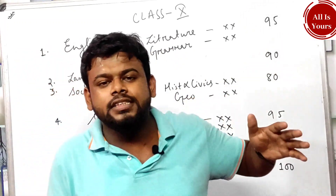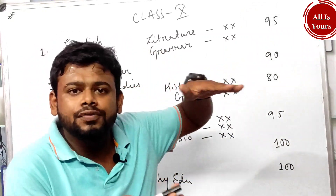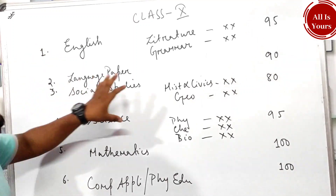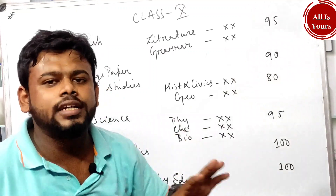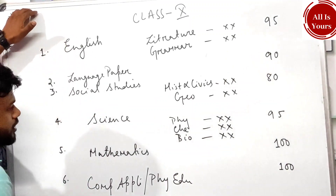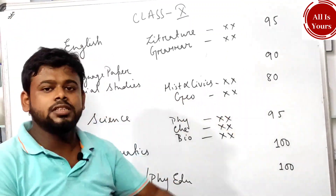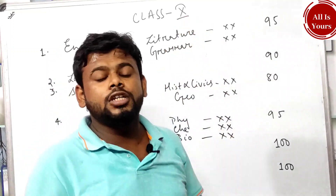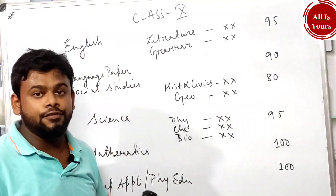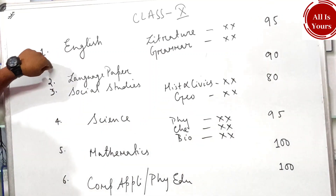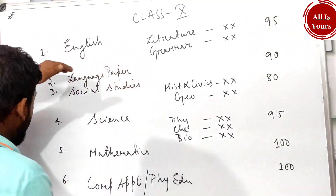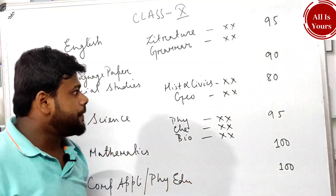When you calculate the percentage, you have to take the best five subjects out of six. English is mandatory — you must include English. So out of six subjects, you pick the top five highest marks, and English is compulsory among those five.